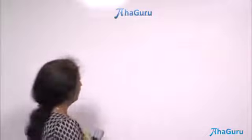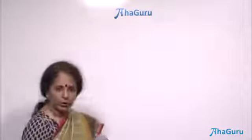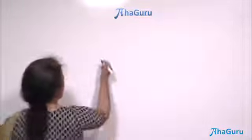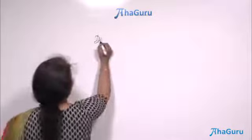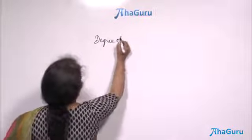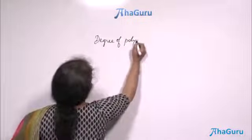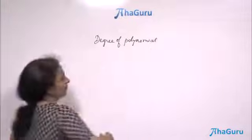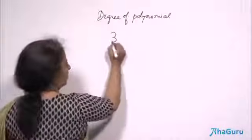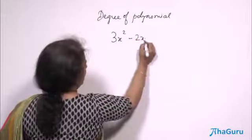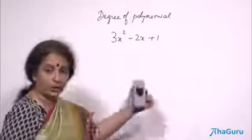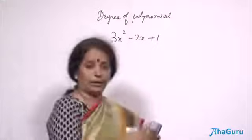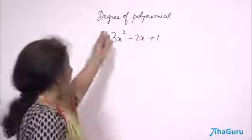Now that we have defined what is a polynomial, let us learn about various types of polynomials. Let us first start with what is known as a degree of a polynomial. Degree of polynomial — let us look at the polynomial first and then we can come to the conclusion. Minus 2x plus 1. Is it a polynomial to start with? Unless it is a polynomial, we cannot talk about the degree and all that.